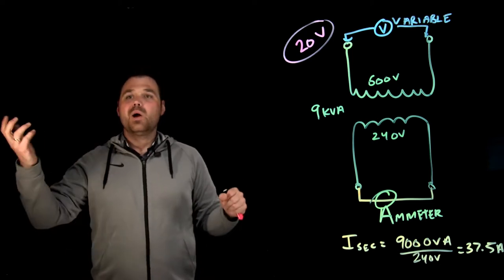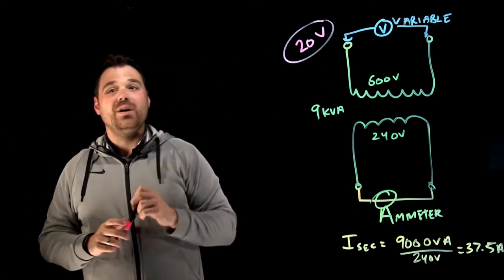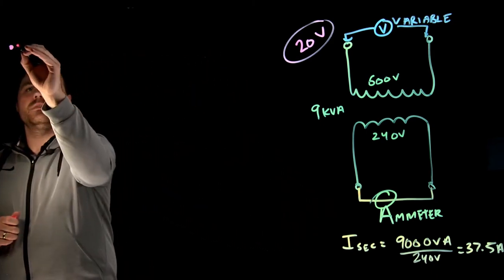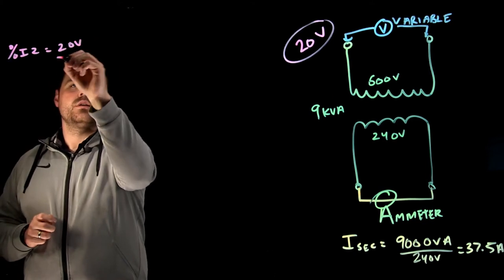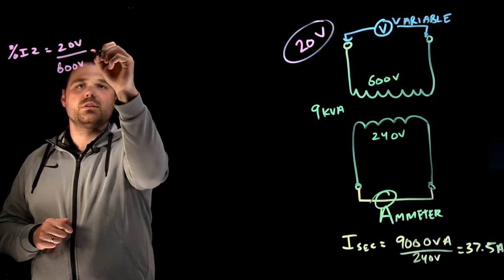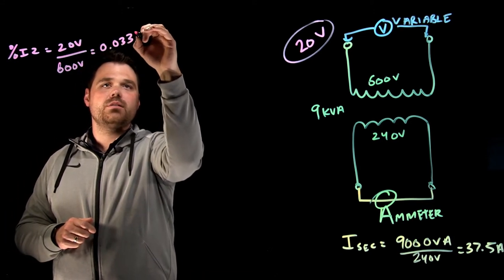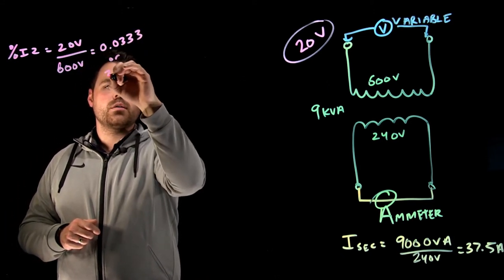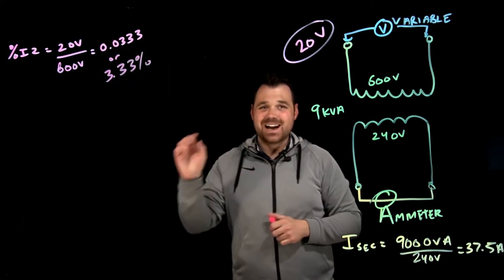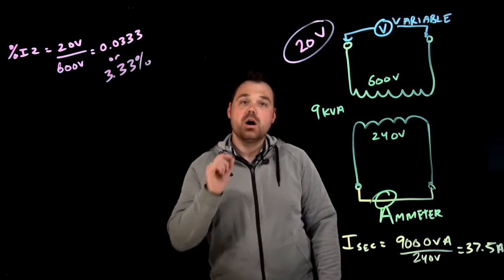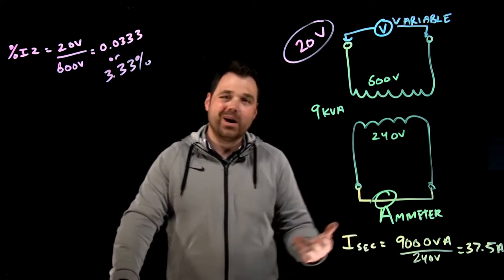So what do we do with that? Well, my percent IZ is 20 volts. So percent IZ will equal 20 volts divided by my rated voltage, 600 volts. So that equals 0.0333 or 3.33 percent. That is the percent IZ or percent impedance of my transformer. Now, like I said, it could be on the nameplate, but it isn't always.